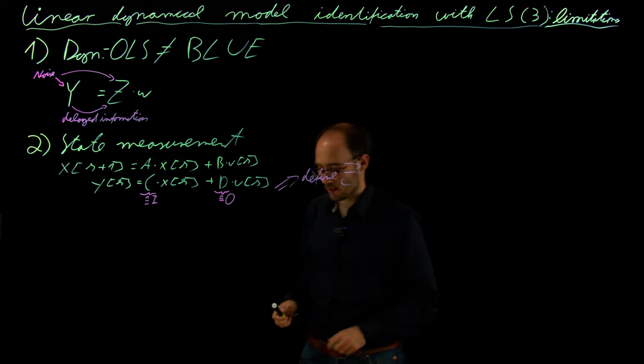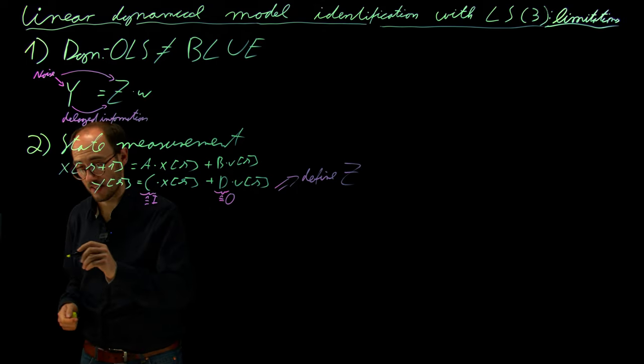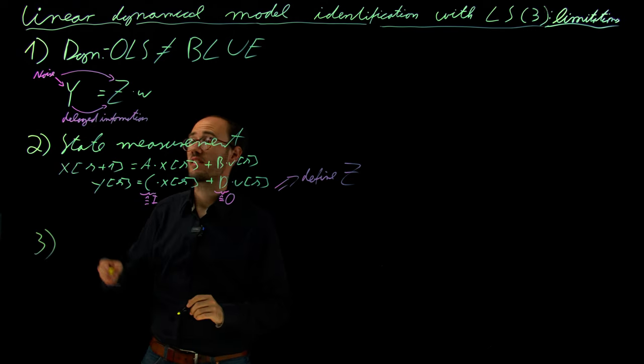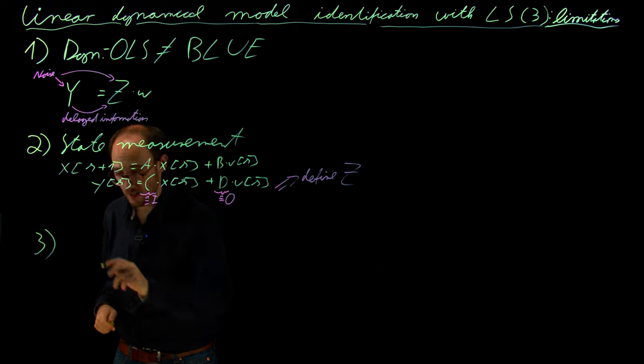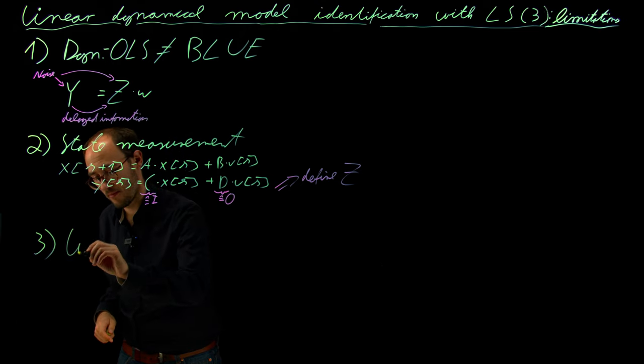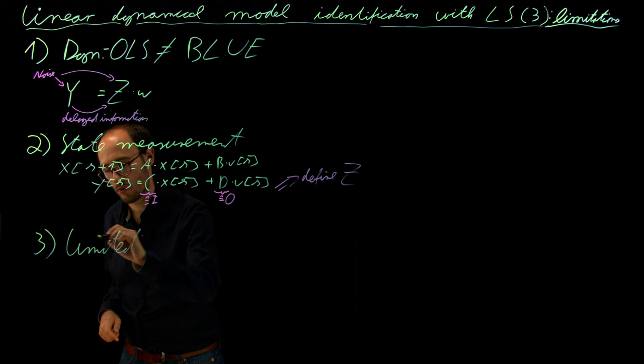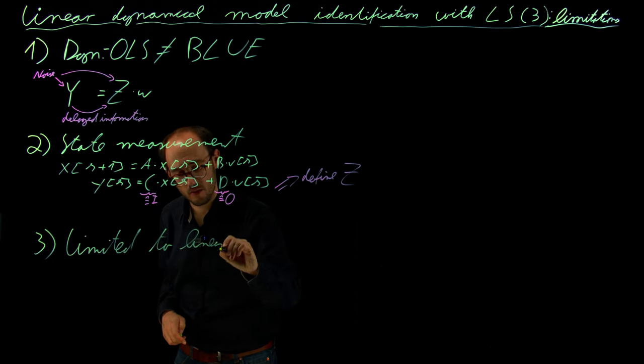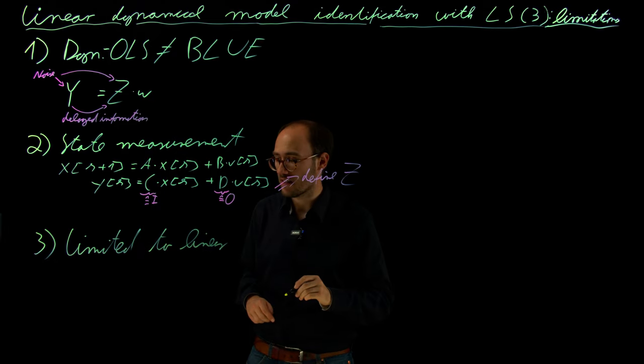Last but not least, the last limitation is that it is limited to linear systems. Linear systems are very nice in terms of the mathematical properties. They are easy to understand.